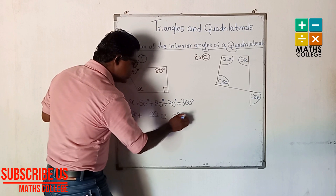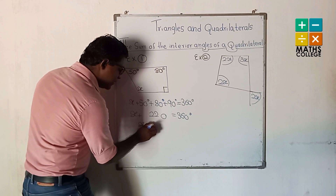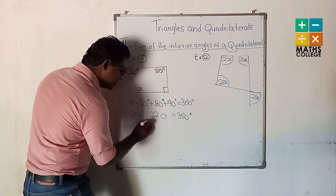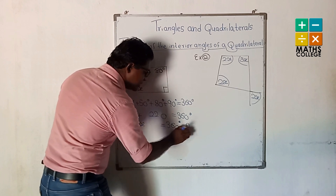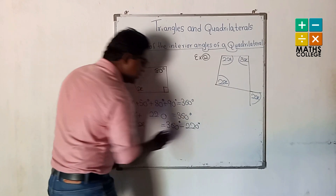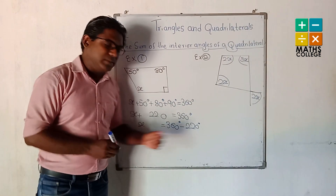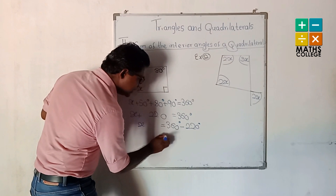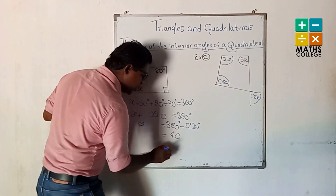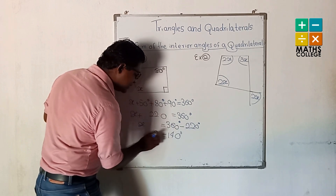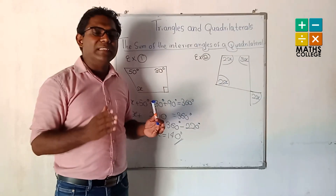Continuing with the equation, the known angles sum to 220. According to our simple equation knowledge, x = 360 − 220. Plus goes to the other side as minus, so x = 140. Very easy.